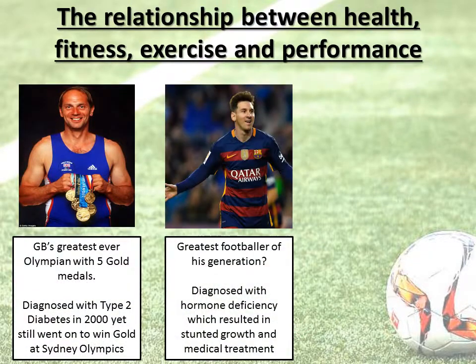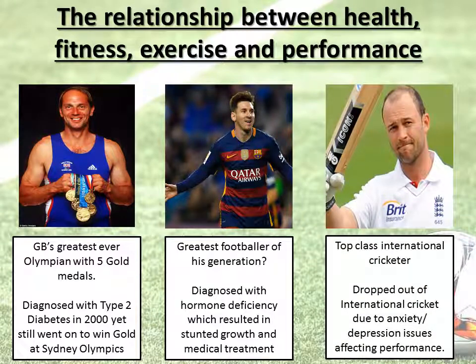Just as a quick point to note — it can actually be possible to be a top-class elite sports star but have issues with your health. On the left-hand side we have Sir Steve Redgrave, the greatest ever Olympian to come out of Great Britain with five gold medals, who was diagnosed with type 2 diabetes yet still went on to win all those medals. Lionel Messi, arguably the greatest footballer of his generation, had a hormone deficiency which stunted his growth — he received medical treatment, which would impact on his health, but he still went on to be a fantastic footballer. And lastly, a top-class international cricketer had to drop out from playing international cricket due to anxiety and depression issues, attributed to emotional health, yet was still one of the best international cricketers in the world at that time.